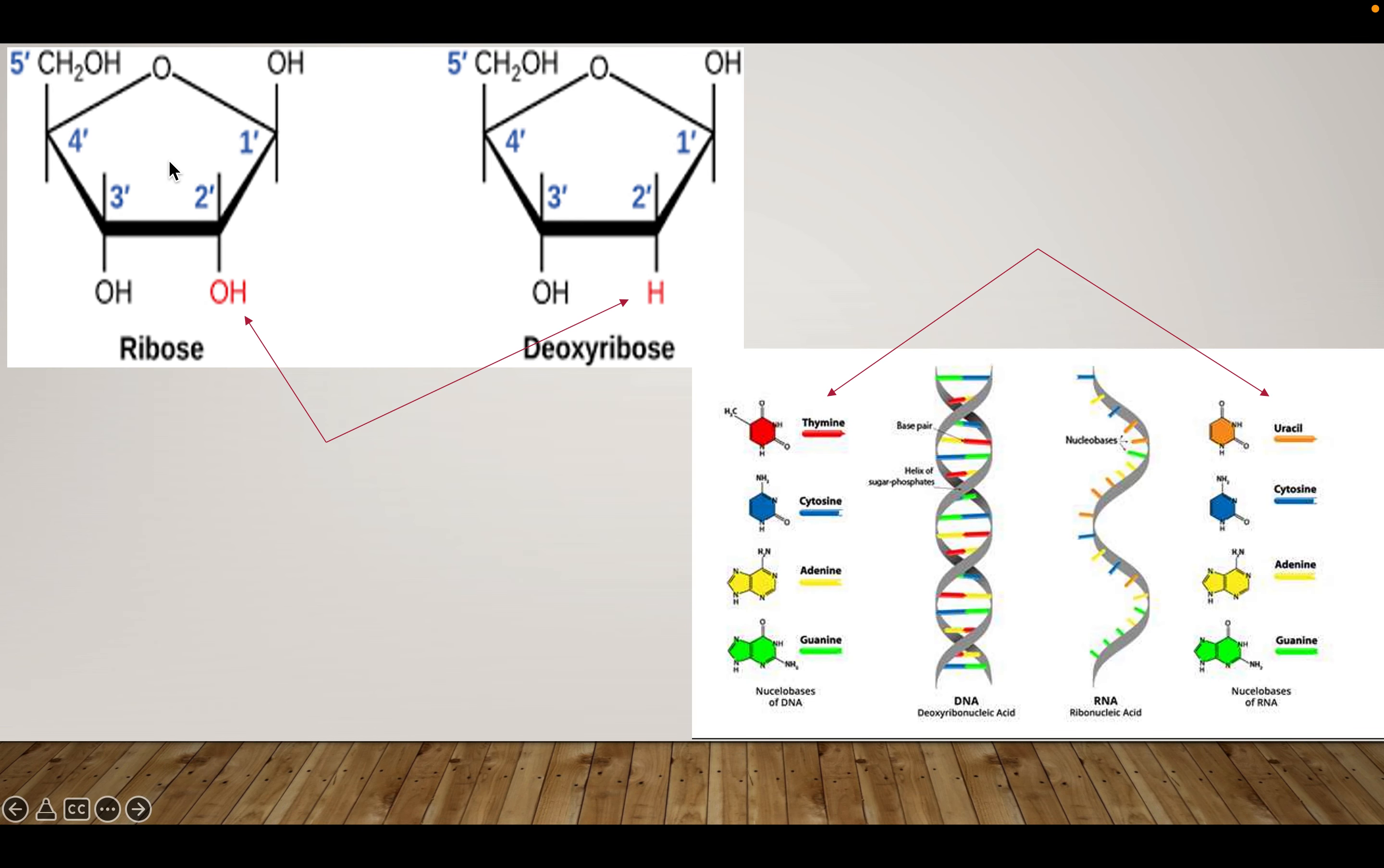So again, differences between ribose and deoxyribose is that oxygen off the two prime carbon here. And you can see this is how you would count the carbons, one, two, three, four, and five prime. And then you can see in DNA we have thymine, whereas in RNA we have uracil.